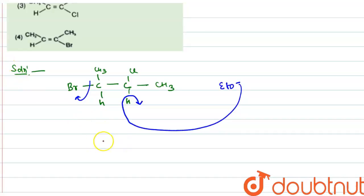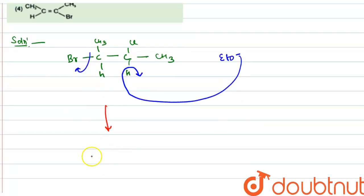So the final product formed will be an alkene which is C double bond C, CH3, H, Cl, CH3.